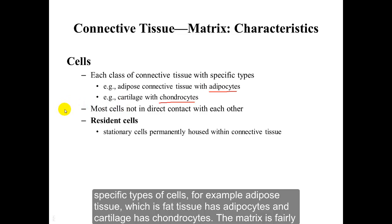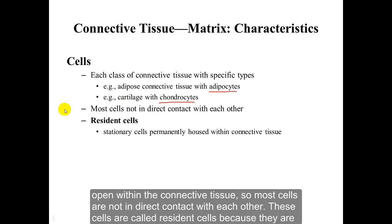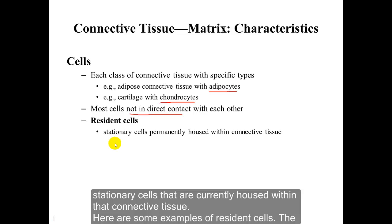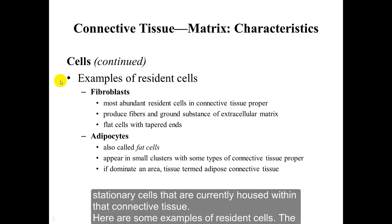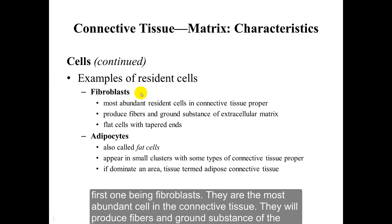The matrix is fairly open within the connective tissue, so most cells are not in direct contact with each other. These cells are called resident cells because they are stationary cells permanently housed within that connective tissue. An example of resident cells is fibroblasts, which are the most abundant cell in connective tissue. They produce fibers and ground substance of the extracellular matrix.